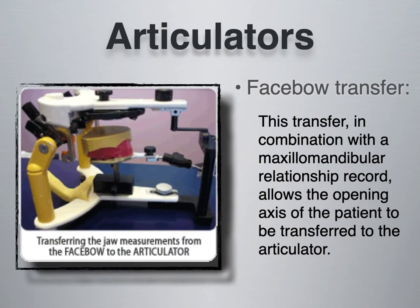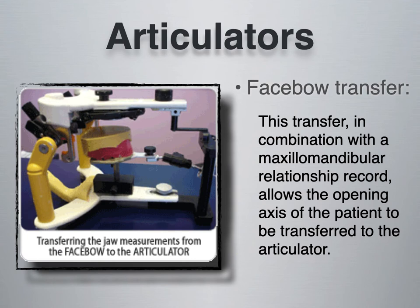This transfer is then attached to the articulator as seen in the image to the left. The transfer in combination with a maxillomandibular relationship record allows the opening axis of the patient to be transferred to the articulator. There is a contraption that allows the bite fork and the position of the maxillary bite fork to be placed onto the articulator exactly the way it was positioned when retrieving the record from the patient's mouth. The face bow is taken in the clinic, and then the face bow transfer is used to mount that recording onto the articulator itself — one of the most accurate ways to transfer information from the patient's mouth and skull to an articulator.